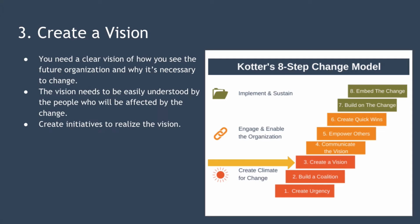Step three is create a vision. You need a clear vision of how you see the future organization looking and why it's necessary to change. This will help everyone understand why you're asking them to move outside their comfort zone and action this change. Every member of the change coalition should be able to describe the vision in just a few minutes, and it's a good idea for you as the leader to practice your vision speech often. During this stage, you also create initiatives to realize the vision and should link these initiatives to the vision so it's clear to everyone how they contribute towards realizing it.